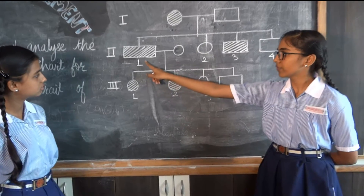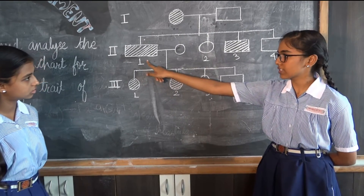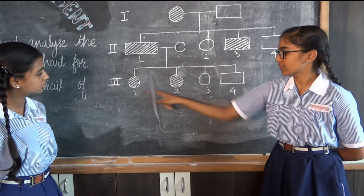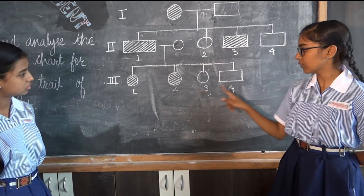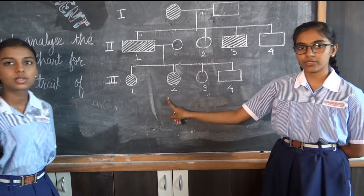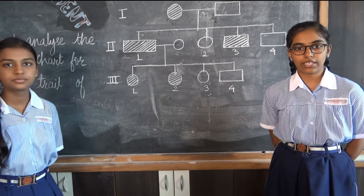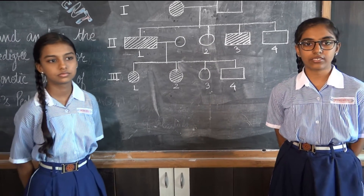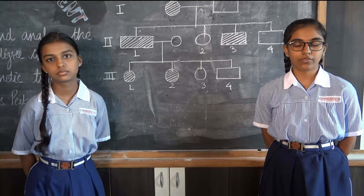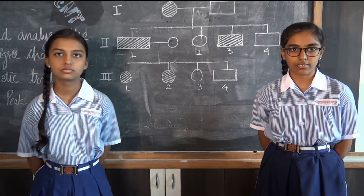The marriage of a widow's peak hairline son with a straight hairline female produces three daughters and one son, of which only two have widow's peak hairline. Widow's peak hairline is not related to gender, and hence we conclude that the female with widow's peak hairline is heterozygous.